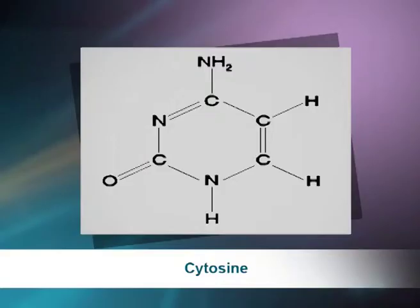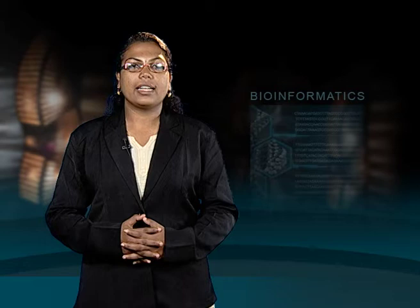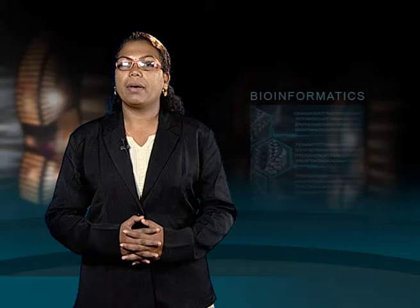Pyrimidines are a class of nitrogenous compounds containing one heterocyclic ring. The bases cytosine, thymine, and uracil are pyrimidines; cytosine and thymine are commonly found in DNA. In RNA, uracil replaces thymine. The strands are linked by regular base pairing: adenine is paired with thymine through two hydrogen bonds, and guanine is paired with cytosine through three hydrogen bonds.